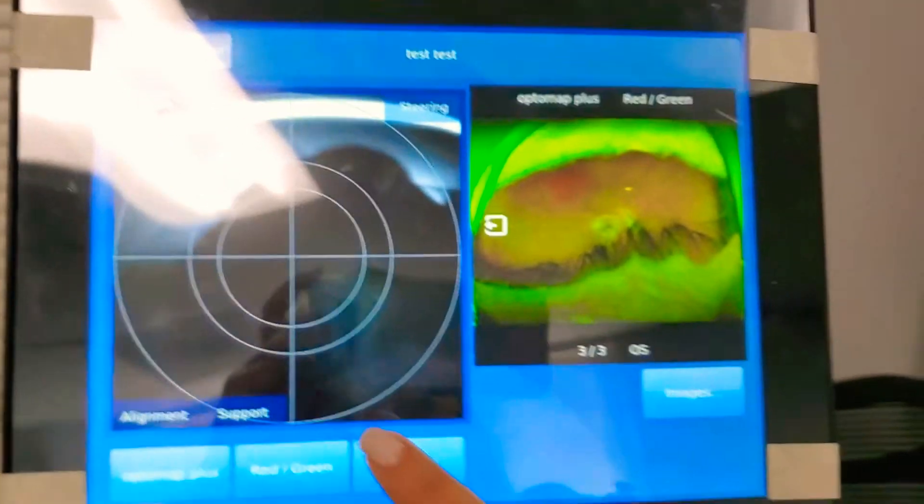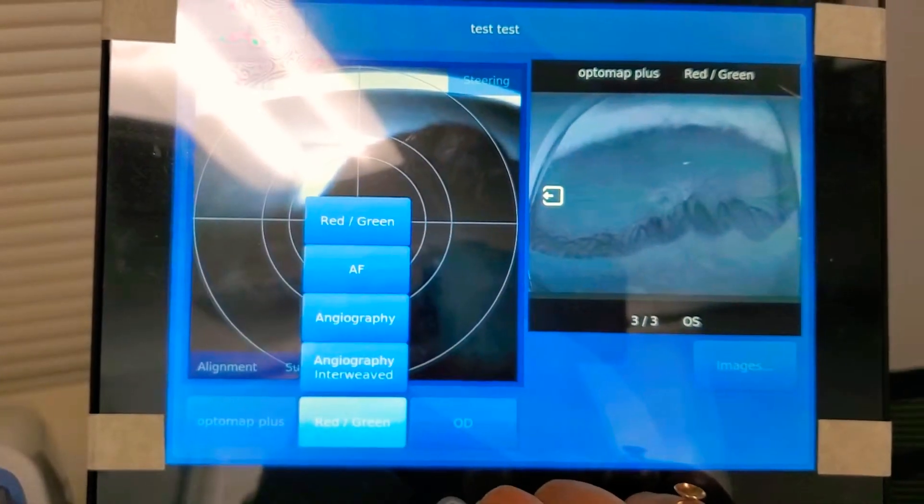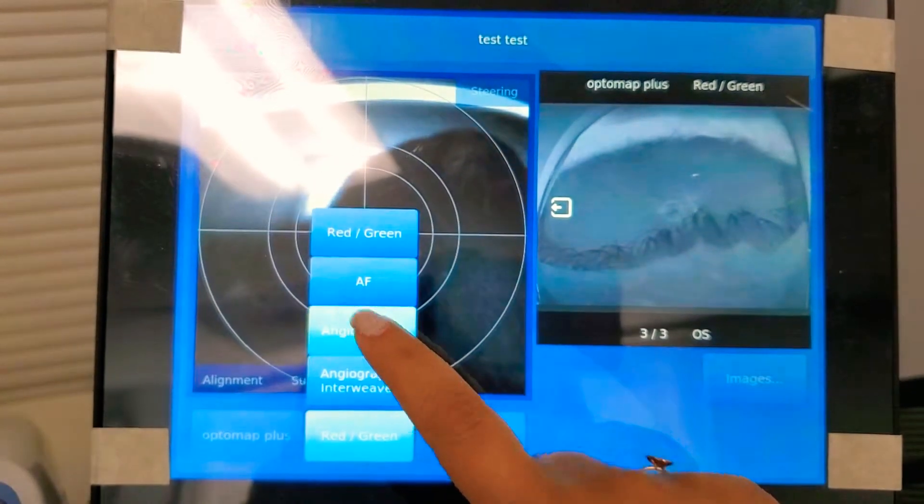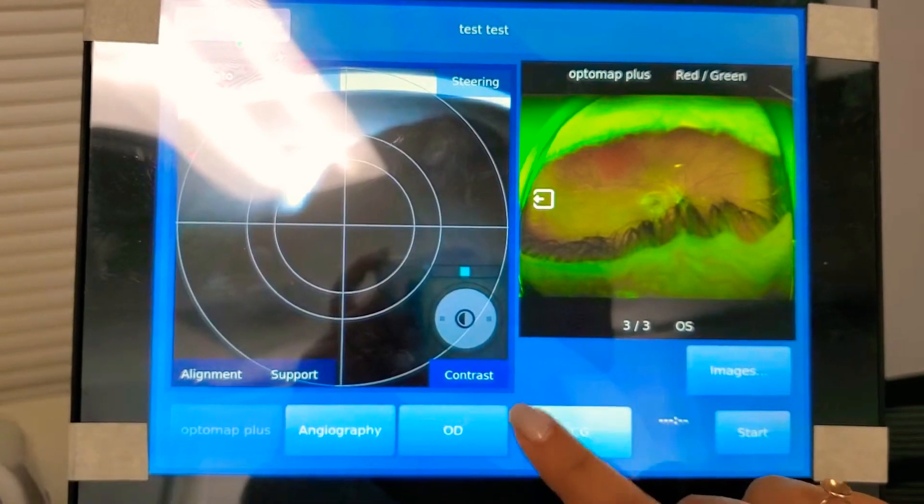All right. Close here. In order to take an FA photo, we're going to go here. Angiography. FA or ICG. We're going to do FA.